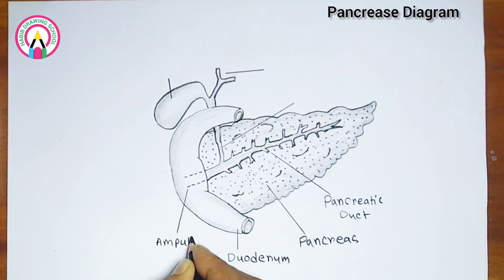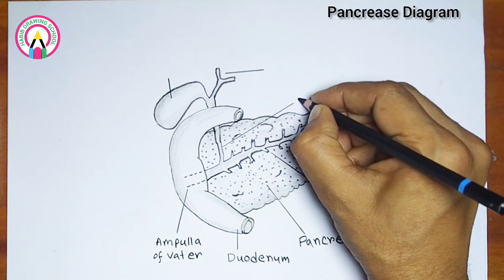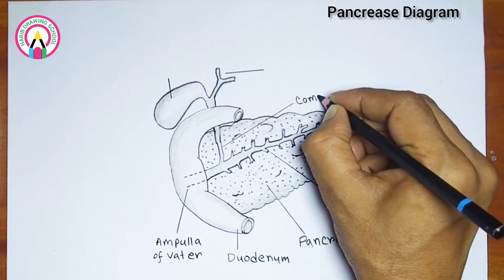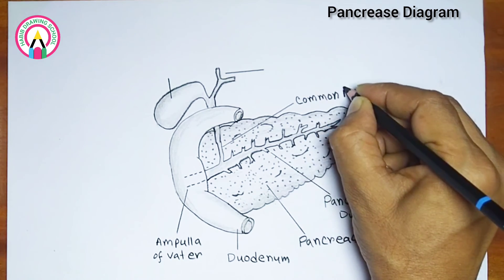The main pancreatic duct joins with the common bile duct, which carries bile from the liver and gallbladder, forming the ampulla of Vater before emptying into the duodenum.